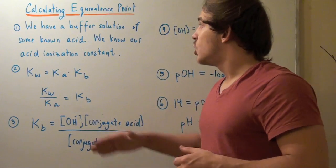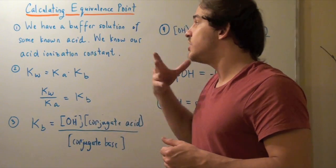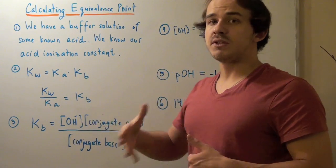So, in the beginning, we have a buffer solution of some known acid. If we know the acid, that means we know the acid ionization constant. We could simply look that up.